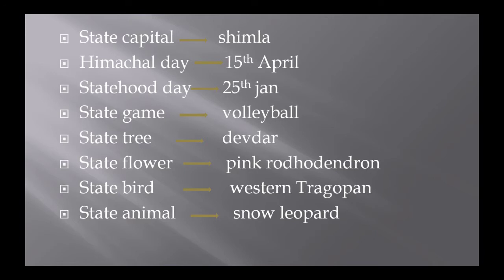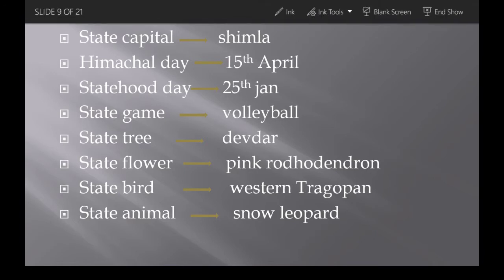The state capital is Shimla. Himachal Day is 15th April, and Statehood Day is 25th January. HP first became a Chief Commissioner's Province on 15th April 1948, and got full statehood on 25th January 1971. The state game is volleyball, state tree is Deodar, state flower is Pink Rhododendron, state bird is Western Tragopan (also called Jujurana), and state animal is Snow Leopard.